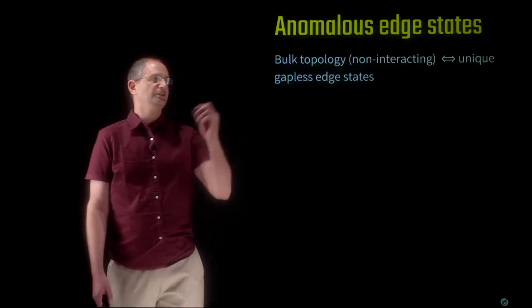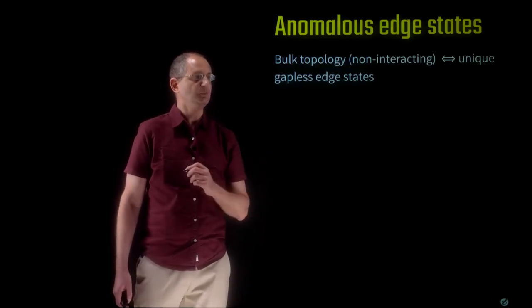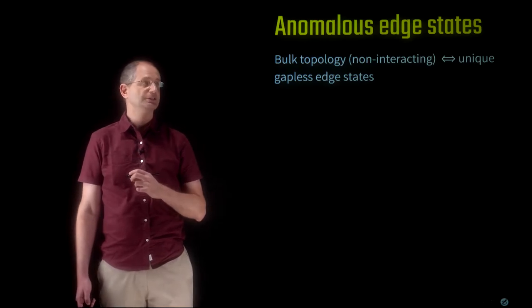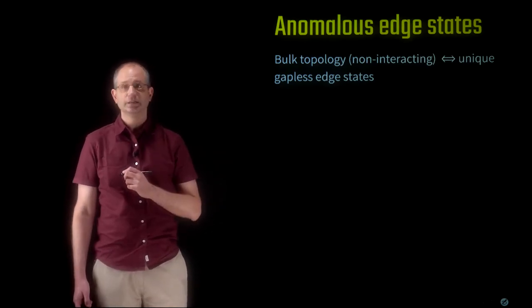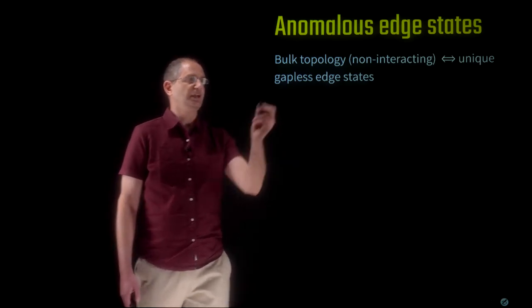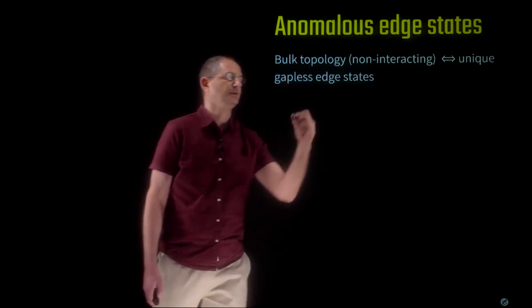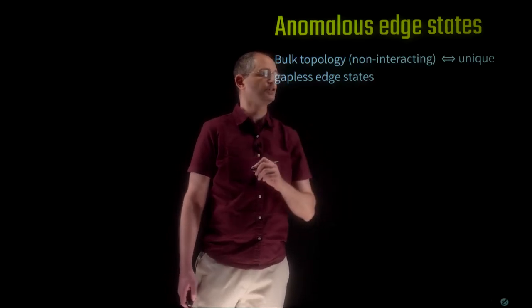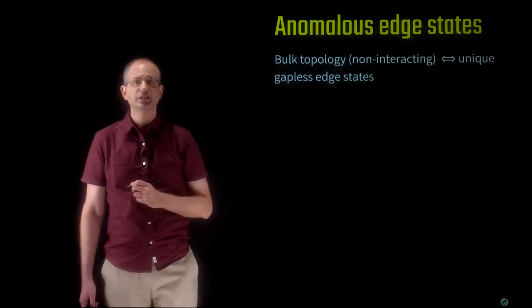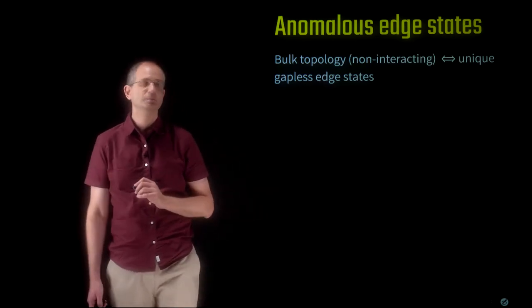In particular, we're going to discuss an important concept: anomalous edge states, which are the special edge states that appear at the boundary once the bulk belongs to a given topological phase. The important concept here is the bulk-edge correspondence — the idea that a given topological phase in the bulk of non-interacting electrons, quadratic Hamiltonians, corresponds to a particular unique gapless edge state that appears whenever the system has open boundaries.